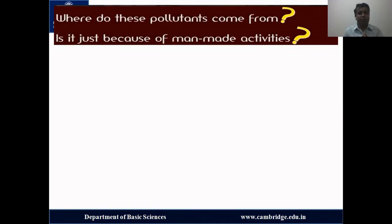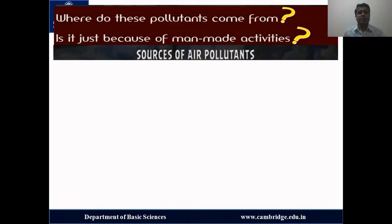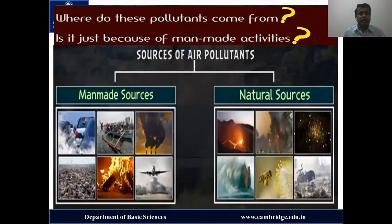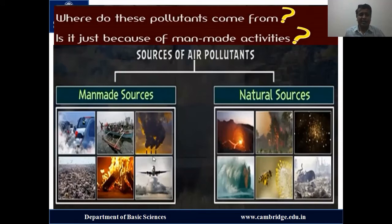Where do these pollutants come from? It is not just because of man-made activities — there are nature-made sources also. Sources of air pollutants can be classified into natural sources and man-made sources. Natural sources include forest fires, volcanic eruptions, dust rising due to natural wind action, and pollens. Man-made sources include burning of fossil fuels for vehicles and industries, burning of firewood for cooking, and transportation — all leading to man-made air pollution.